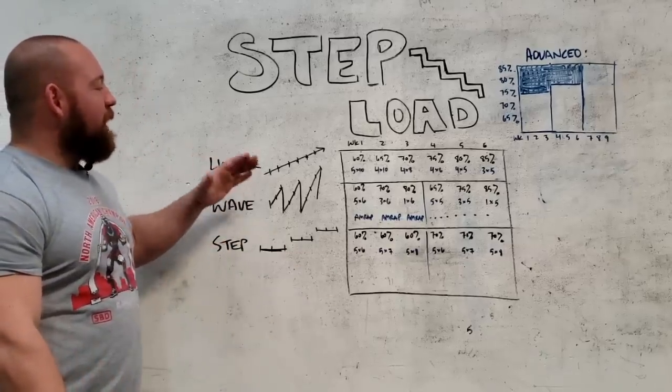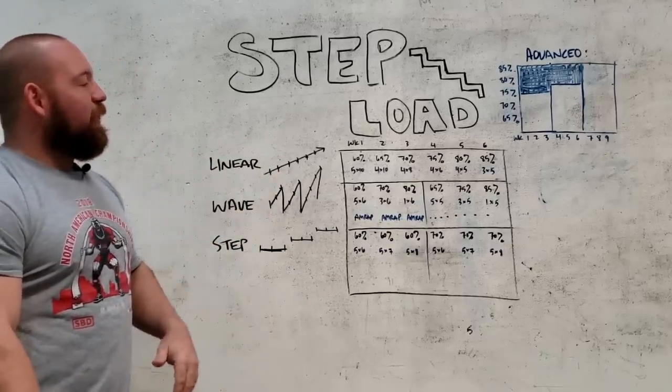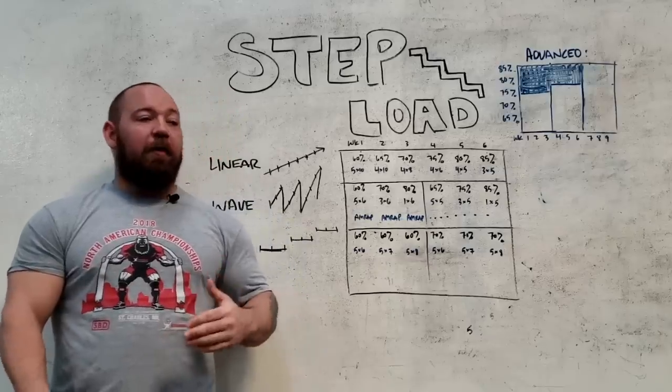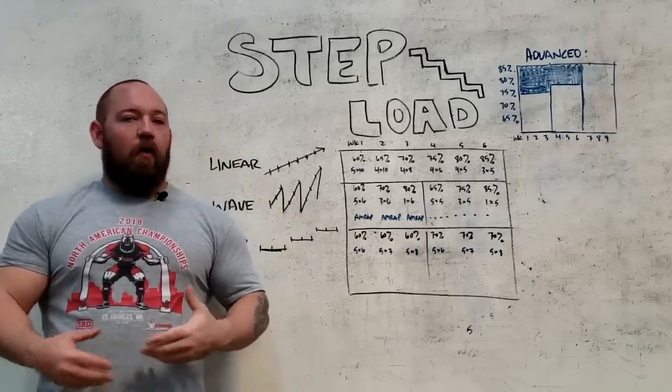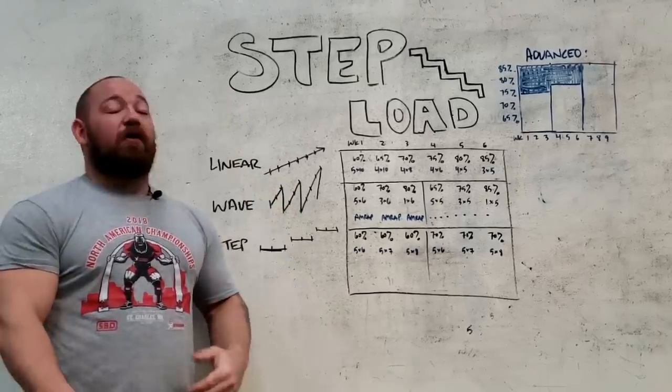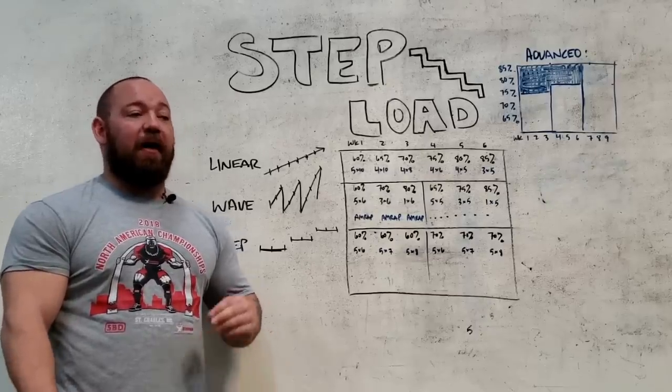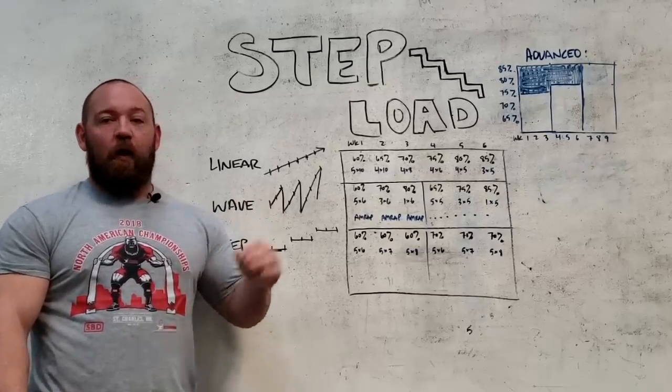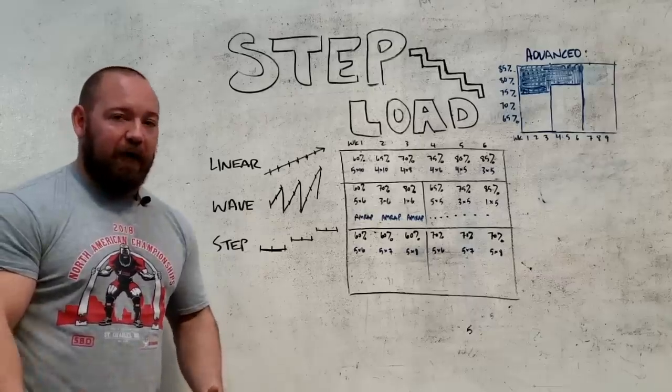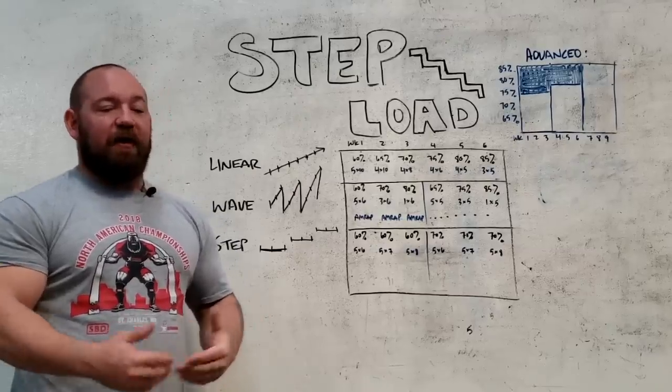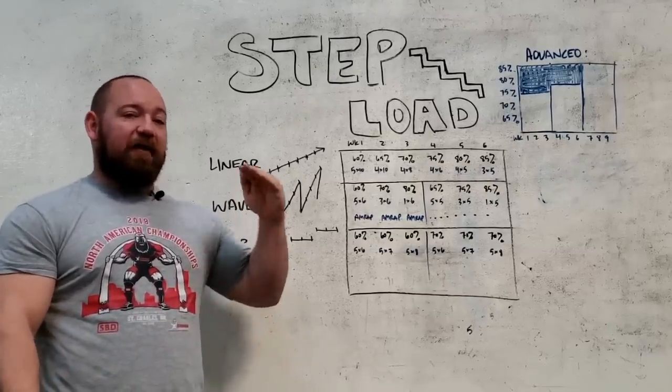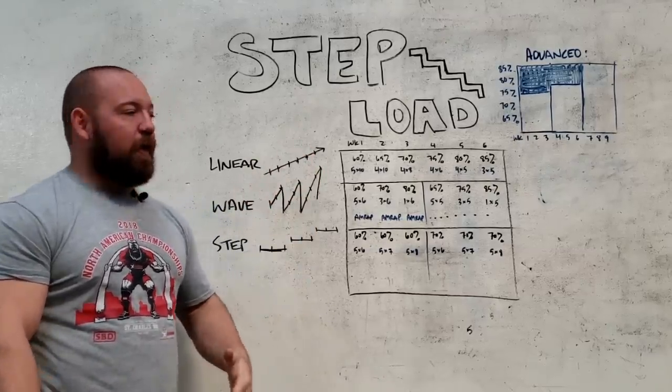The most common loading method, the backbone of everything, is linear. Linear loading means you're making steady continuous increases in one or more variables in the training program. We're talking about linearly increasing the load, making set increases in weight from session to session in a very predictable and methodical way. It might be a simple linear progression where the sets and reps stay the same, but it's just five to ten pounds every single time you repeat the workout.